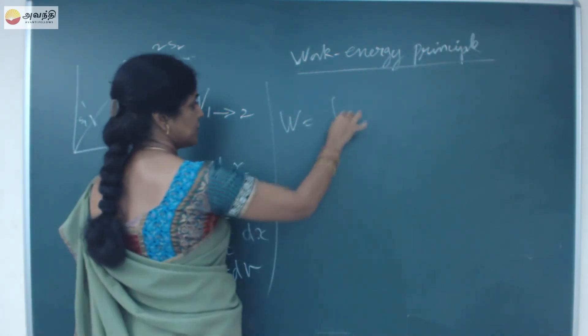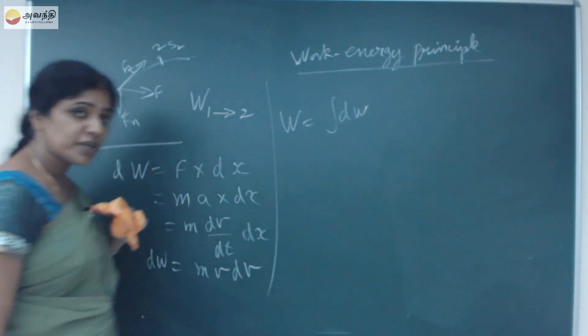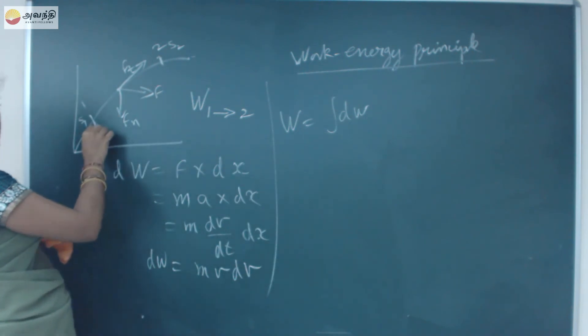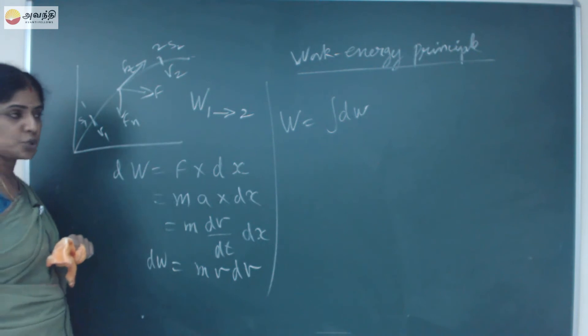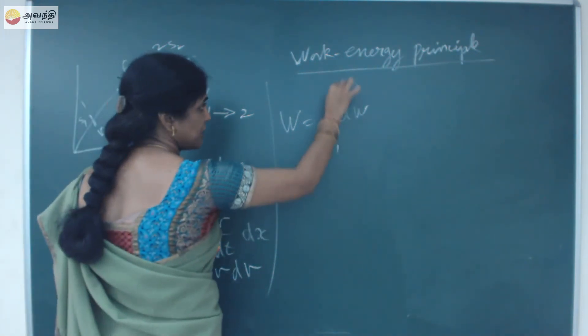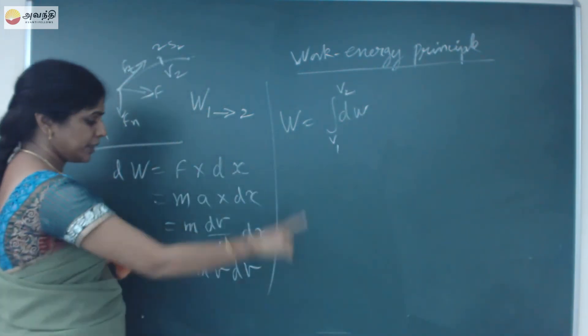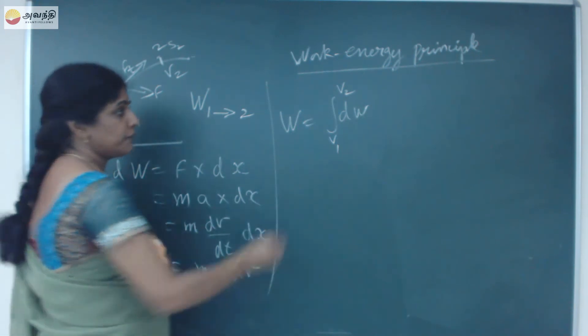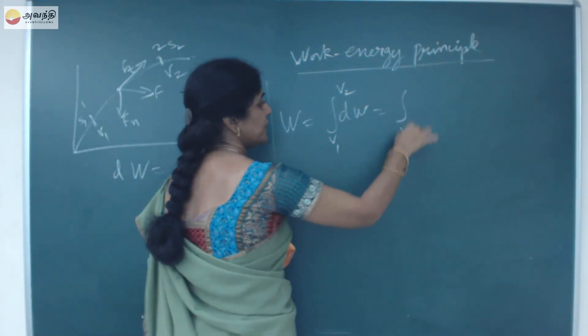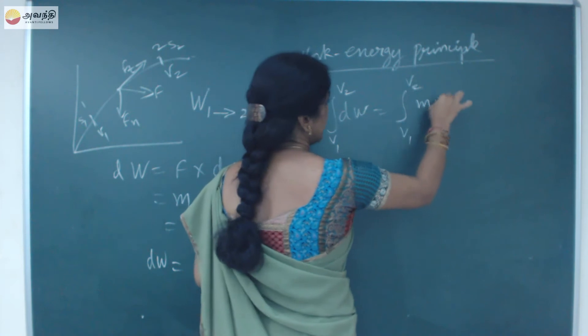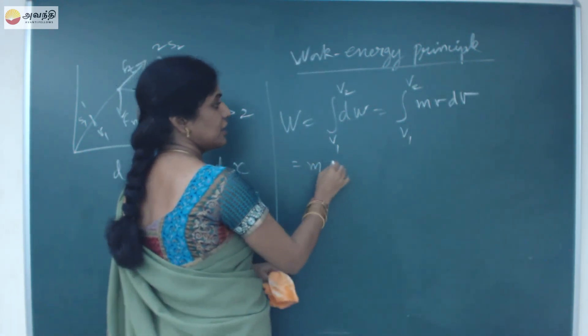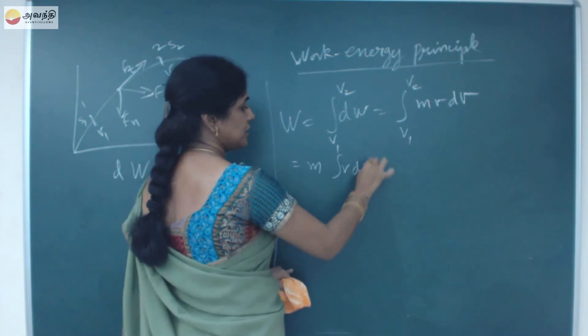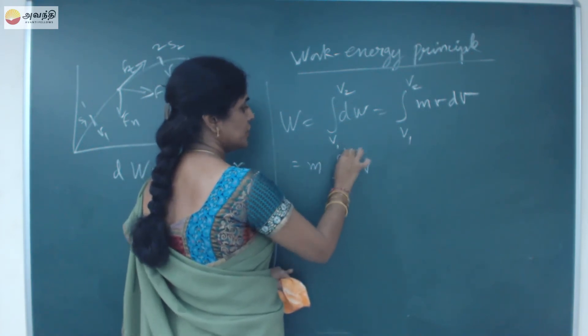If you want to calculate the total work done, W is equal to integration of dw between the limits. When the object is at position 1, velocity be v1. When it is here, velocity be v2. So I will integrate this between the limits v1 to v2. dw is equal to mv dv, so it will become v1 to v2 mv dv. Mass, I will take it out. I will integrate only this vdv between the limits v1 to v2.